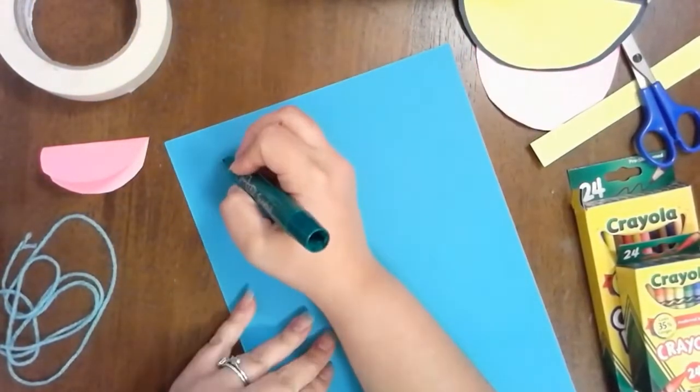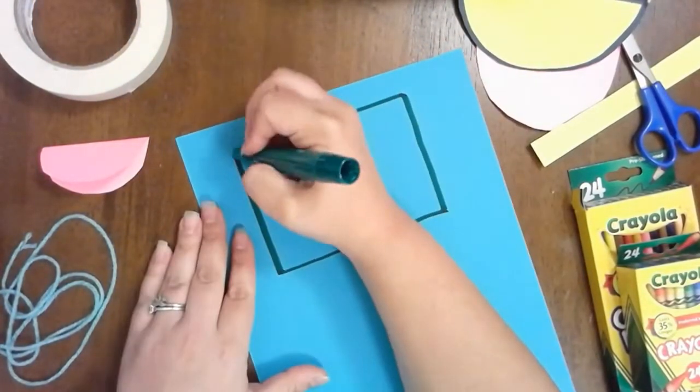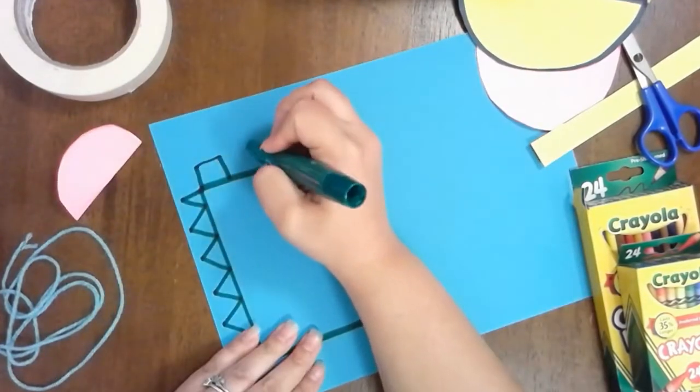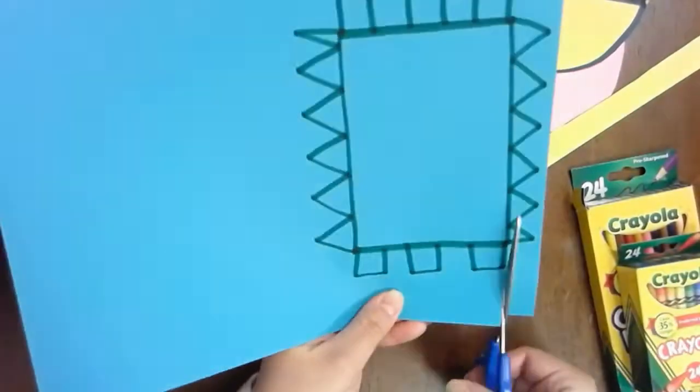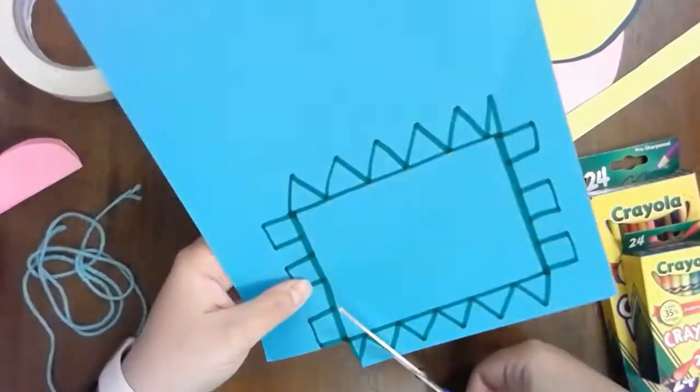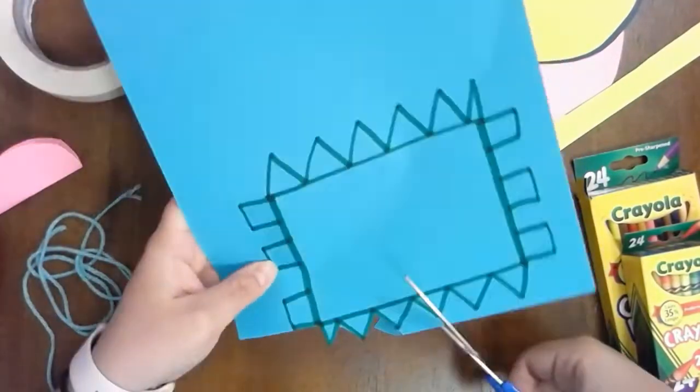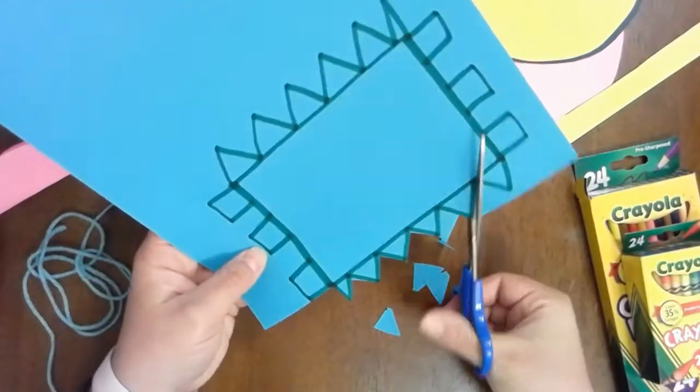I am now going to start my next shape. This time I'm going to make a rectangle. To make your shapes interesting, you can also put a border around them. Just like your other shapes, you're going to cut this one out.